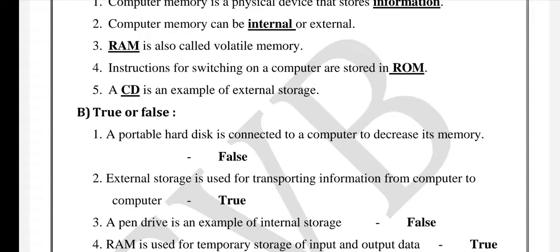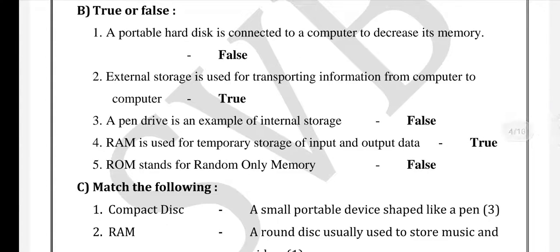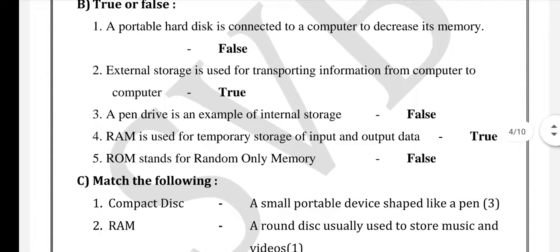Next, True or False. First one: a portable hard disk is connected to a computer to decrease its memory — that is False. For external storage, we can connect to a computer and transfer information — True. Second: a pen drive is an example of internal storage — that is False; a pen drive is external storage.